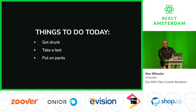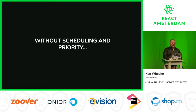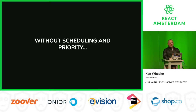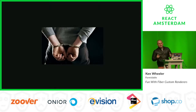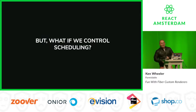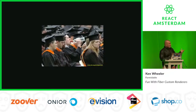Say you had some things to do today: get drunk, take a test, put on pants. In a world without scheduling and priority, approaching this task list linearly, you'd probably fail your test because you went to it drunk — you might not even make it to the test, and you'd get arrested for showing up without pants. But if we could control the scheduling of our tasks, you'd pass your test, graduate, and then throw back a bottle.